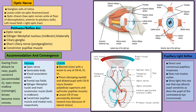The optic nerve is the nerve for vision; it starts from the ganglion cell of the retina. The important part here is the optic chiasma, where optic tract fibers cross over. That is why if you have injury to the right optic tract, you will become blind in the left eye and vice versa.